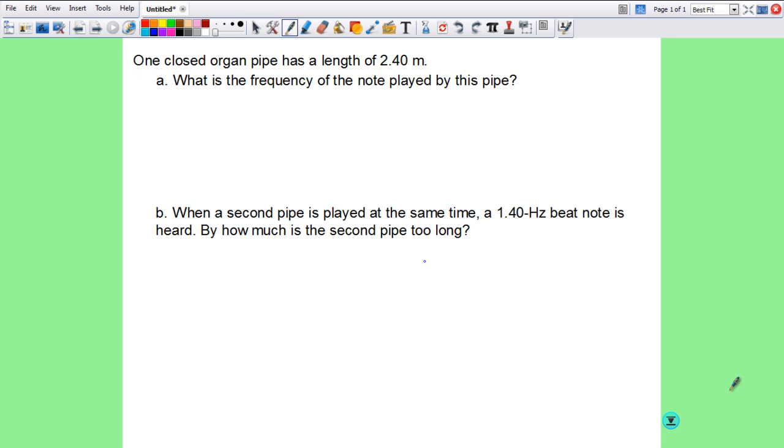So just a quick little problem. We have a closed organ pipe with a length of 2.40 meters. Define the frequency of this note is what we want to do. So the first thing we need to do, remember that the length of the pipe equals lambda must be 1 over 4. So we rearrange this guy and we get lambda equals 4L. So plugging this stuff in, 4 times 2.40 meters. We get our lambda, our wavelength for this guy to be 9.60 meters.